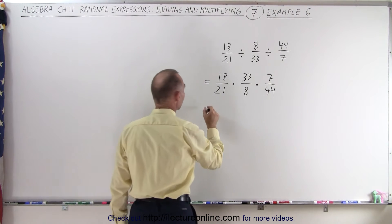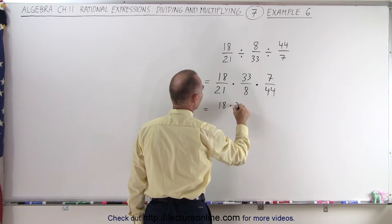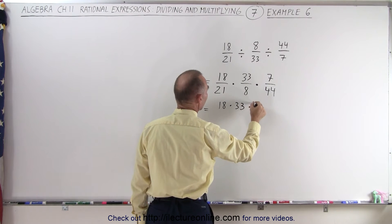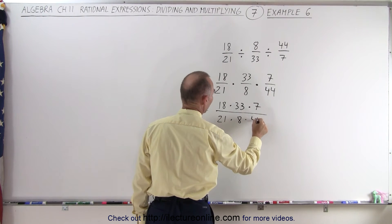So now we can write that with a single numerator, 18 times 33 times 7, divided by 21 times 8 times 44.